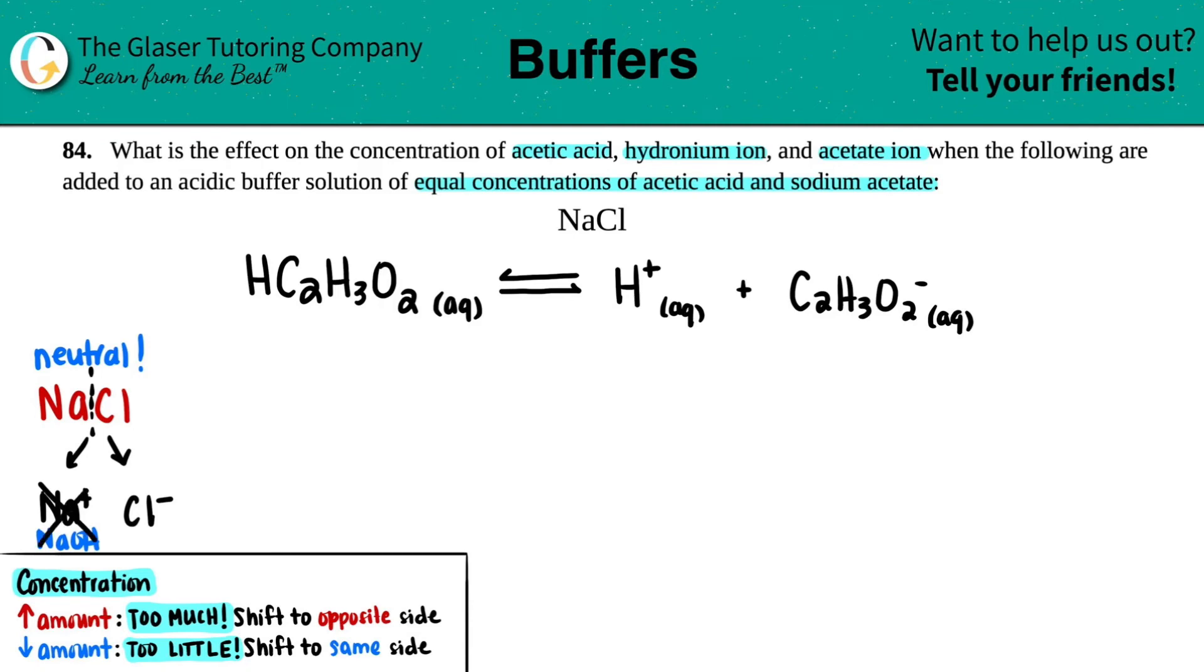And then the same thing for chlorine. The conjugate would be HCl. HCl is one of your really strong acids, so the conjugate would be so weak that it's basically classified as neutral.